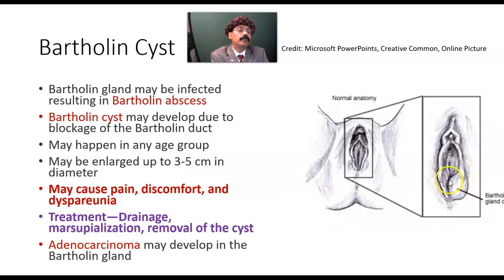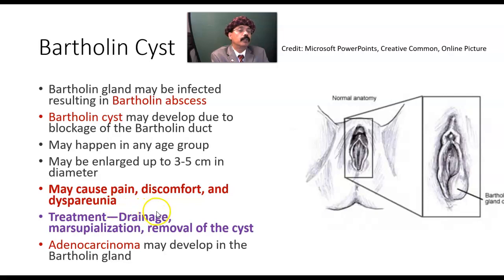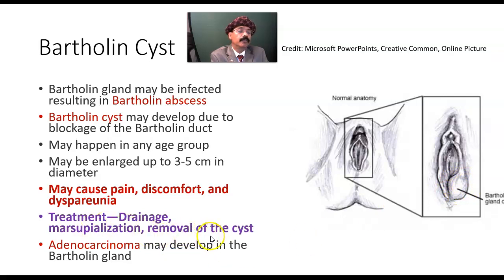The cyst may enlarge up to three to five centimeters in diameter, causing pain due to acute inflammation — called adenitis, meaning inflammation of the gland. It may cause discomfort walking, discomfort sitting, and dyspareunia, which is painful sexual intercourse, because this area is inflamed. Management includes drainage of the fluid or abscess, marsupialization — which is permanently stitching the lining of the cyst to the skin — or surgical removal. Adenocarcinoma may also develop in the Bartholin gland, as it is lined by glandular columnar epithelium.